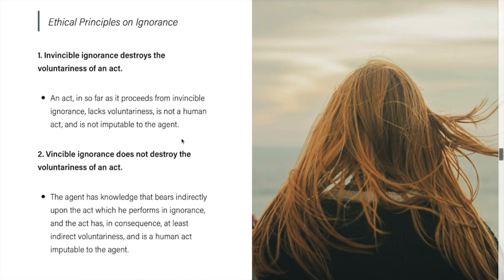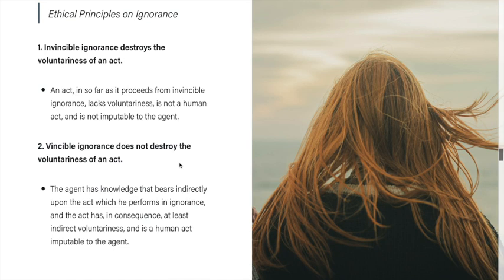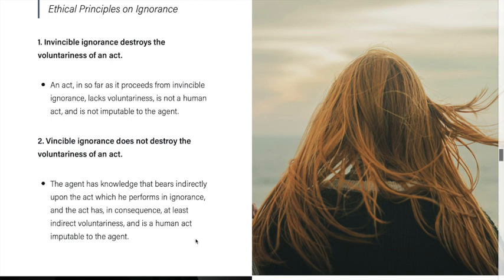Second, vincible ignorance does not destroy the voluntariness of an act. The agent still has knowledge that bears indirectly upon the act, so the act has at least indirect voluntariness and is a human act imputable to the agent. Because vincible ignorance can still be dispelled by proper diligence, there is still a certain degree of voluntariness to the things done out of it.